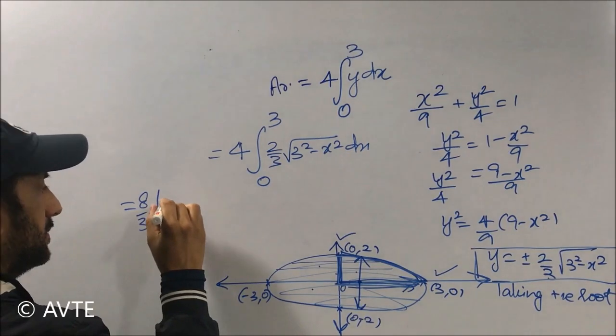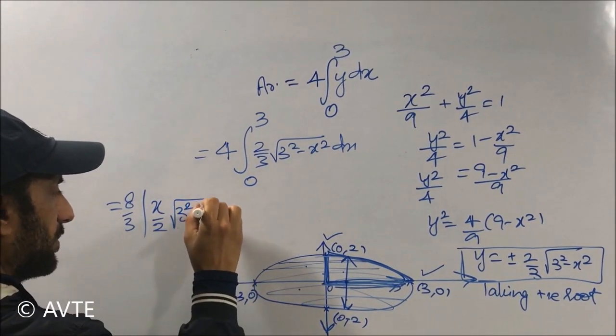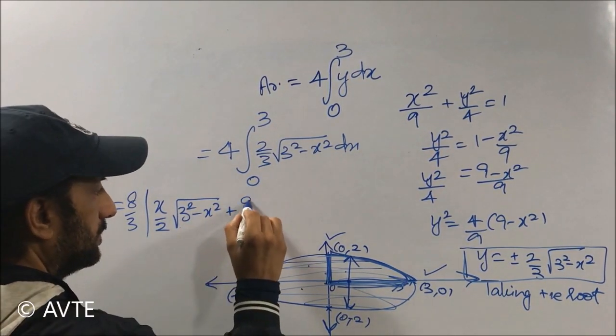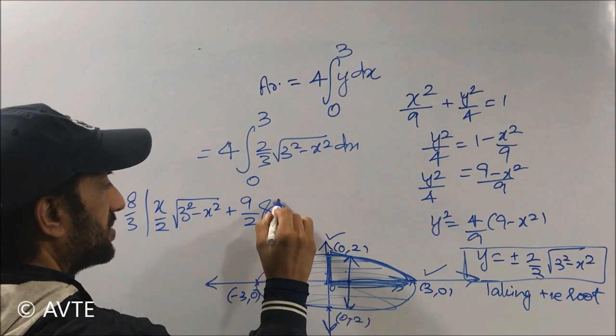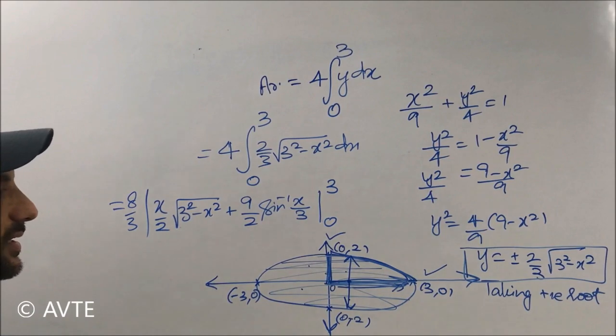It is x upon 2 under root of a square minus x square, which is 3 square minus x square, plus a square by 2, sine inverse of x upon a, which is x by 3. And we are now putting the limits.